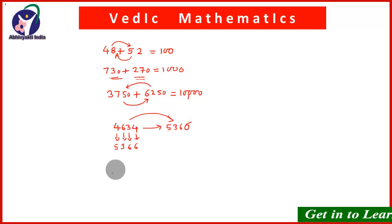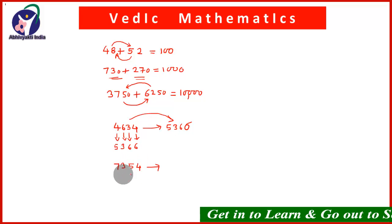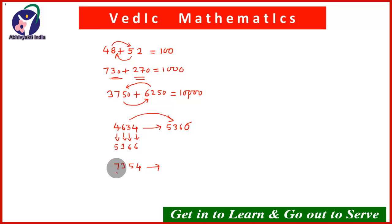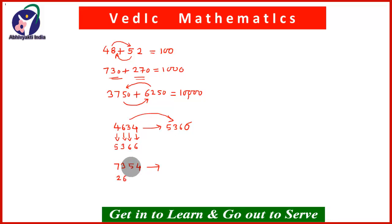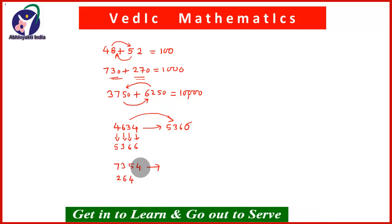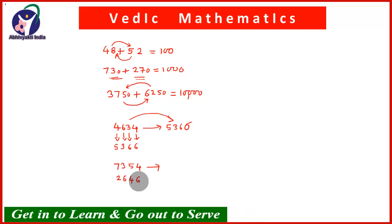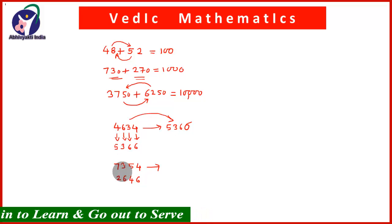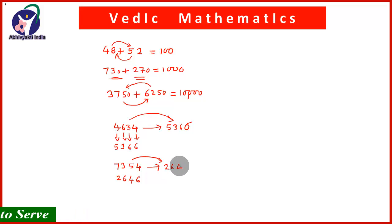Take another example: 7,354. We have to find the complement. So: 7 and 2 give 9; 3 and 6 give 9; 5 and 4 give 9; 4 and 6 give 10. All digits from 9 and the last from 10. Therefore the complement of 7,354 is 2,646.